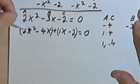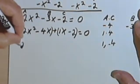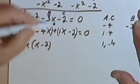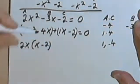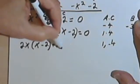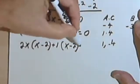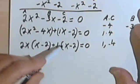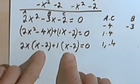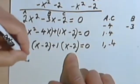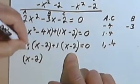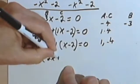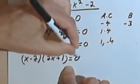I'm going to group the first two terms and the second two terms. I can factor 2x out of the first binomial, so I get 2x times (x minus 2). For the second group, the only thing I can factor out is 1. So I've got 2x times (x minus 2) plus 1 times (x minus 2). Since I've got an (x minus 2) and an (x minus 2), I'm going to make (x minus 2) one of my factors, and my other factor will be (2x plus 1). And that equals 0.